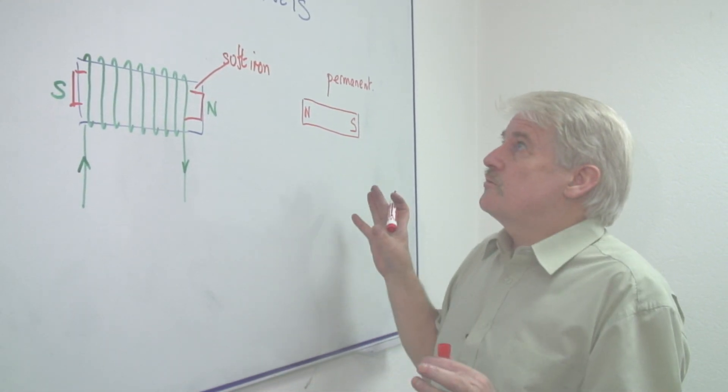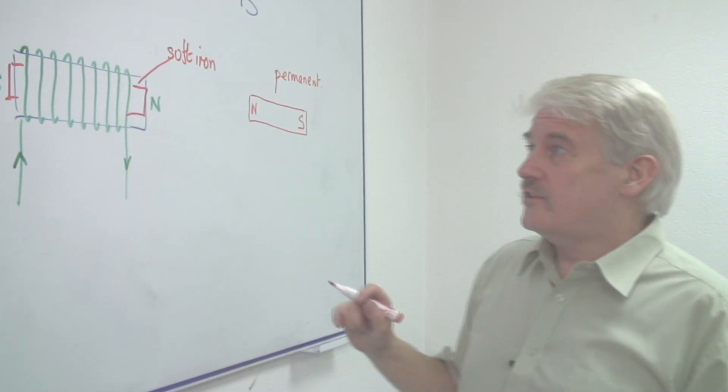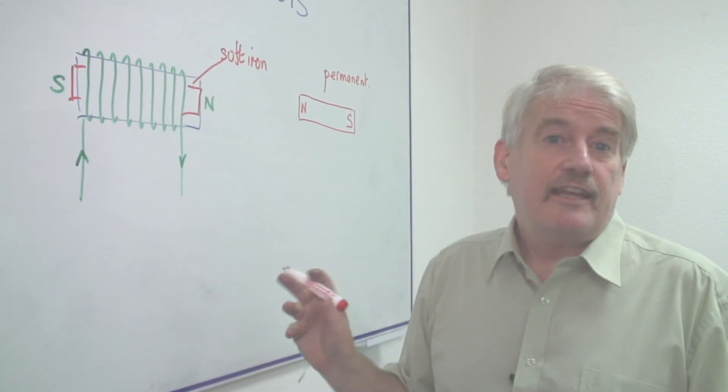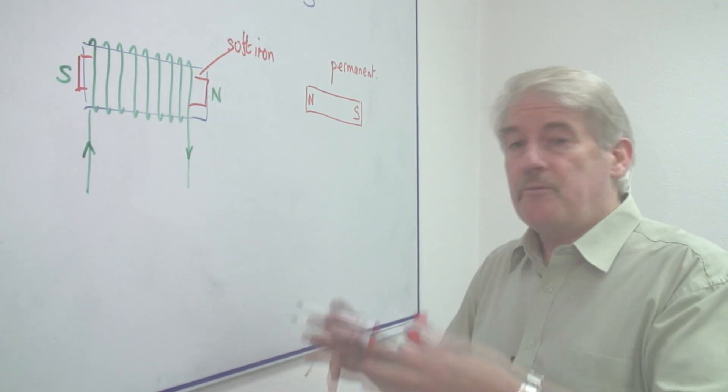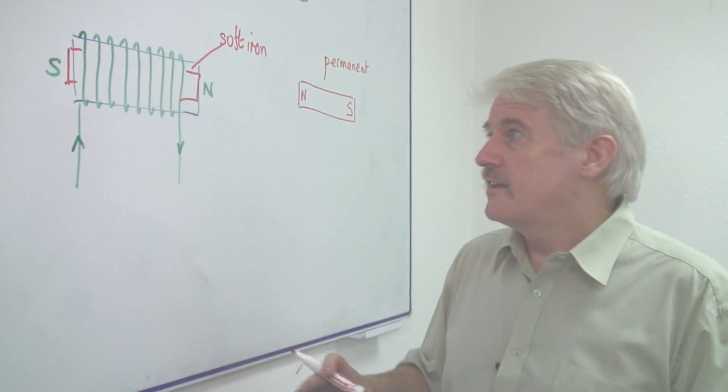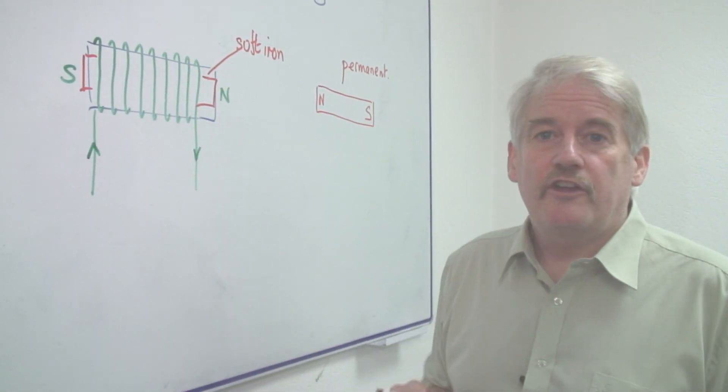Why an electromagnet? Why should we use one? Well the answer is, it's because we can switch it on and off that it has an advantage. If I want to pick up a piece of metal and then drop it, if I can switch this on and off, it's easy.